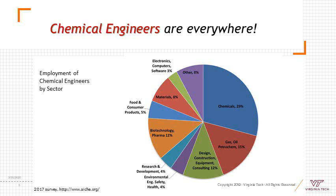Chemical engineers are everywhere. Traditionally, you might think of chemical engineers being involved in the chemical industry. About 30% of chemical engineers do end up supporting the chemical industry, and another 15% in gas, oil, and petrochem energy. But there's a wide variety of other roles that chemical engineers fill, including electronics and computer manufacture, materials, food and consumer products, biotechnology and pharma, research and development, environmental engineering and safety, and construction of various chemical plants and food processing plants.